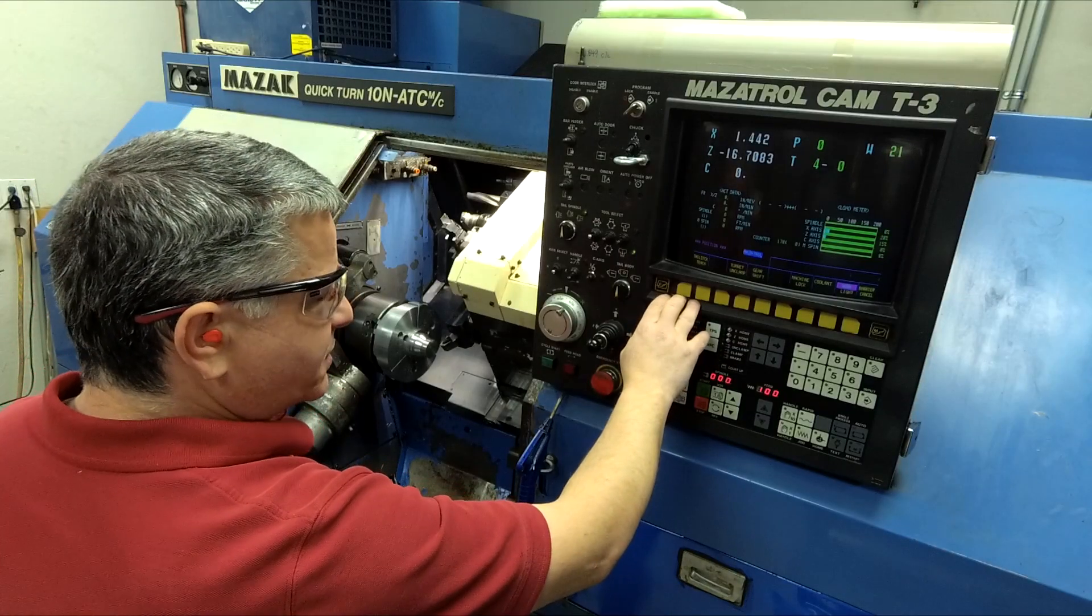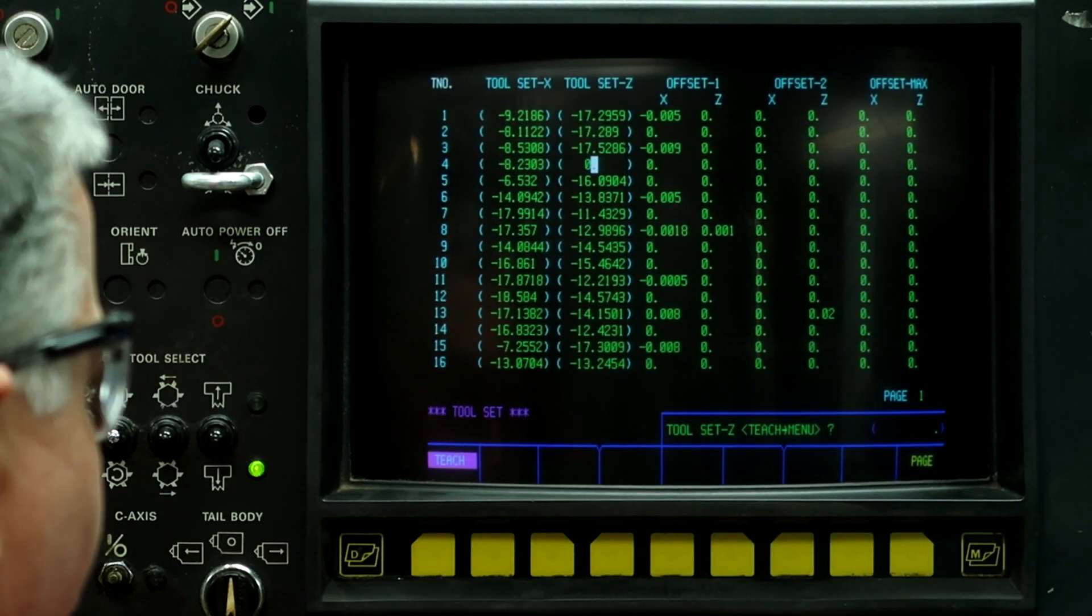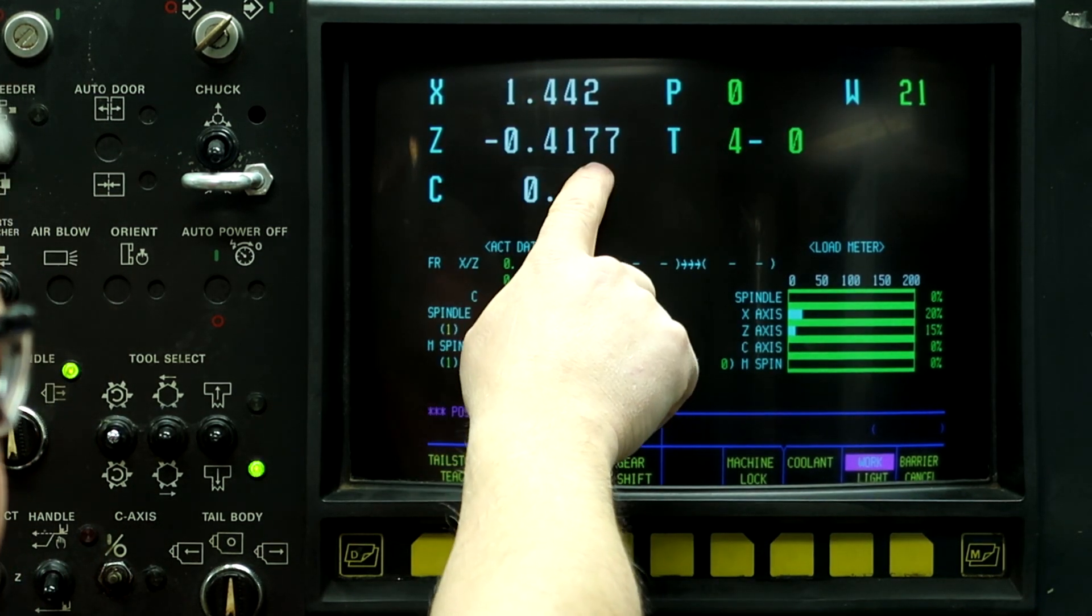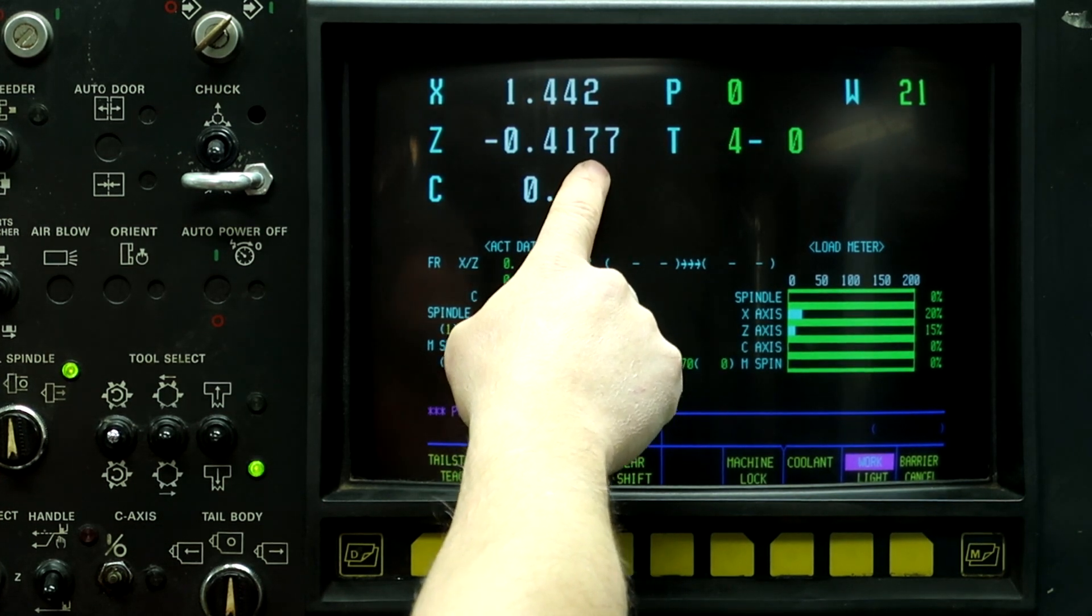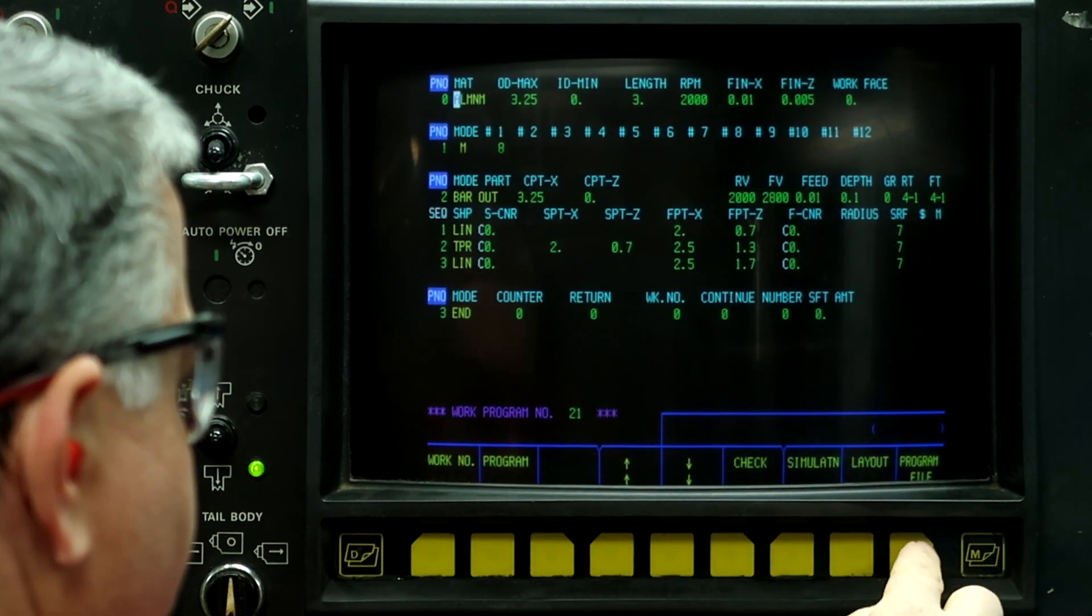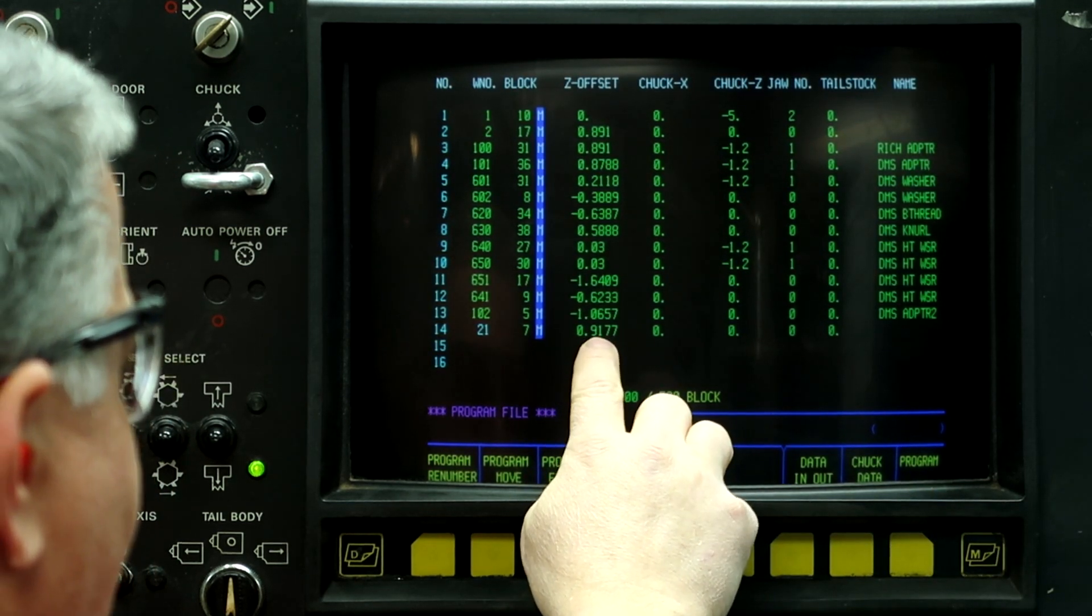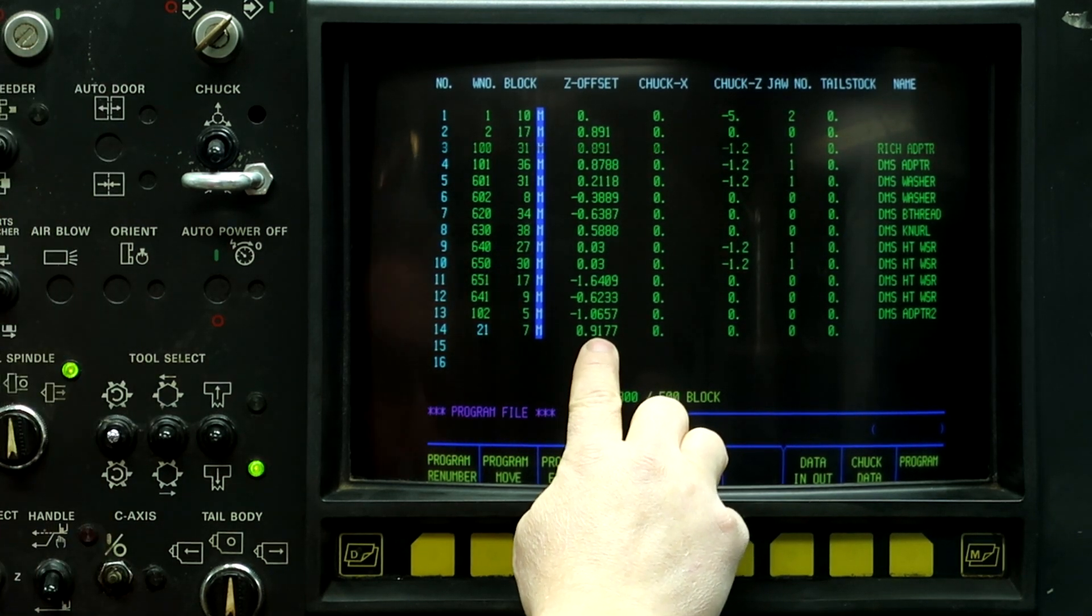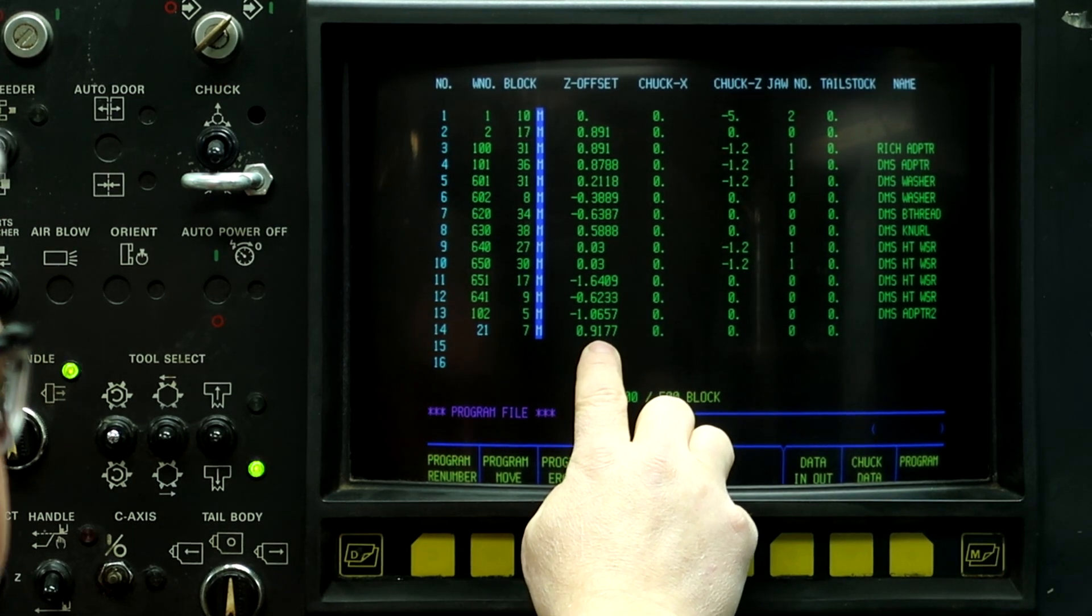However, we can't just type in a half inch on here. If we go teach point five, it'll give us a number, but it's not a half inch in front of the part. So we did something wrong. So what we need to do is compensate. Go to program, program file. We need to compensate and add this number, the Z offset of the program we're currently in, point nine one seven seven, to the half inch. So that would be one point four one seven seven.